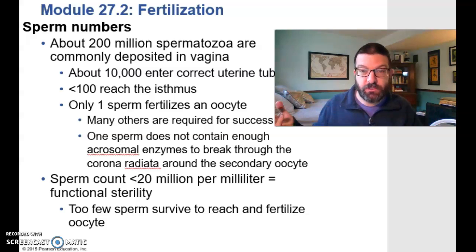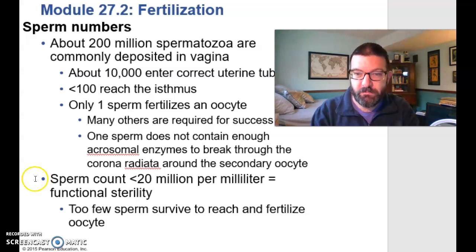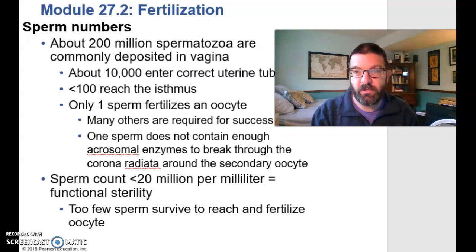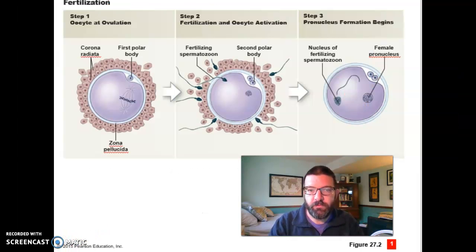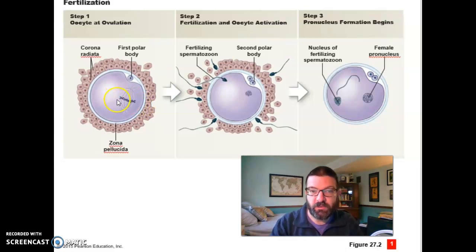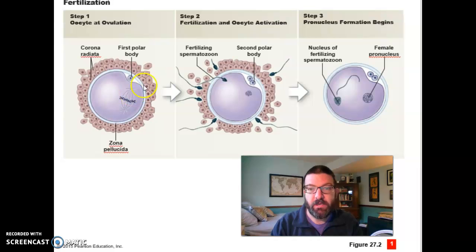You need this many sperm largely because it's dangerous — a lot of sperm are just going to die along the way or not make it. A sperm count below 20 million per milliliter is essentially sterility; it's very unlikely that you're going to be able to fertilize an egg with that kind of sperm count. The oocyte has not finished meiosis until fertilization — it's stuck in metaphase 2. All of the chromosomes are lined up along the metaphase plate and those chromatids are ready to be pulled apart, but they have not been yet and they won't be until a sperm fertilizes the egg. Once that sperm fertilizes the egg, we finish up meiosis.